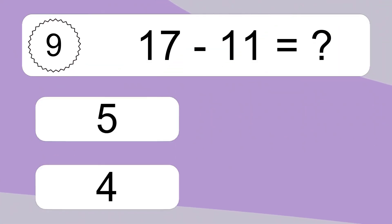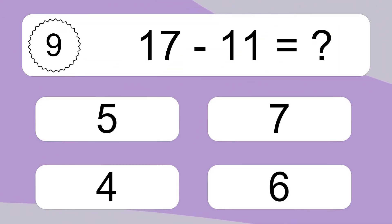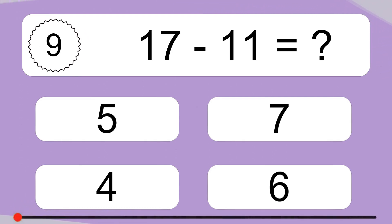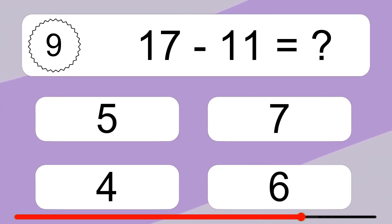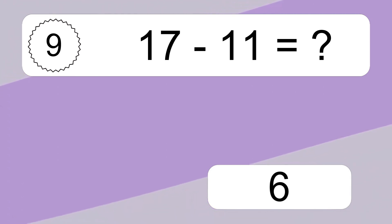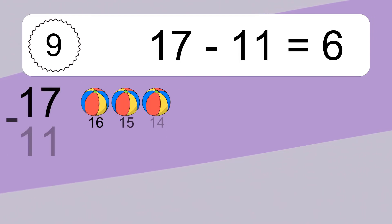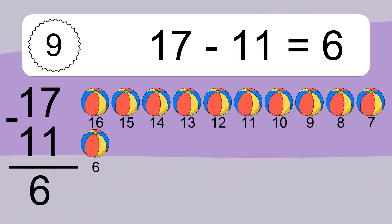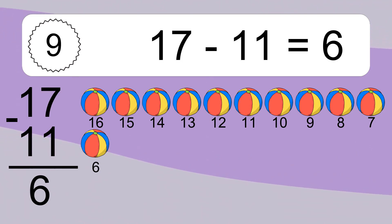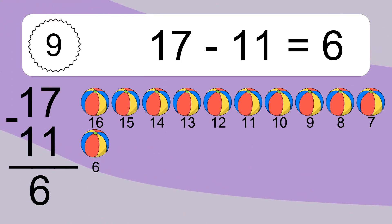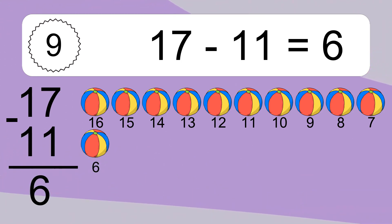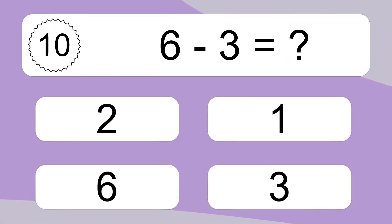17 minus 11 equals what? 17 minus 11 equals 6. Let's count it. 16, 15, 14, 13, 12, 11, 10, 9, 8, 7, 6.